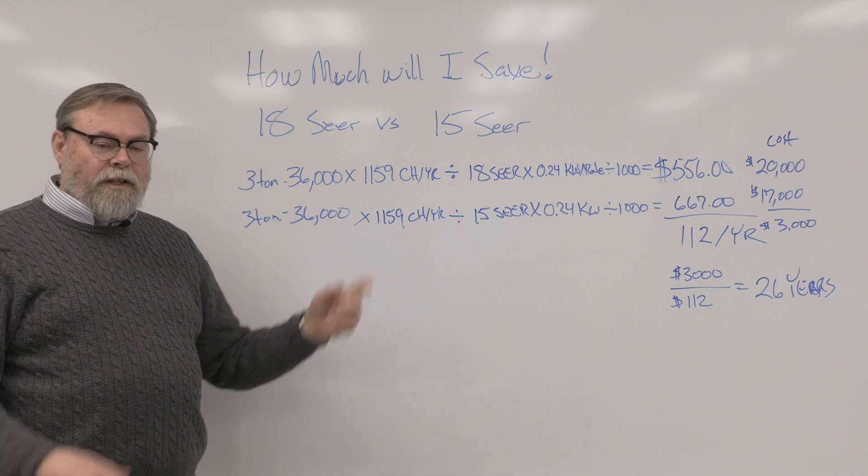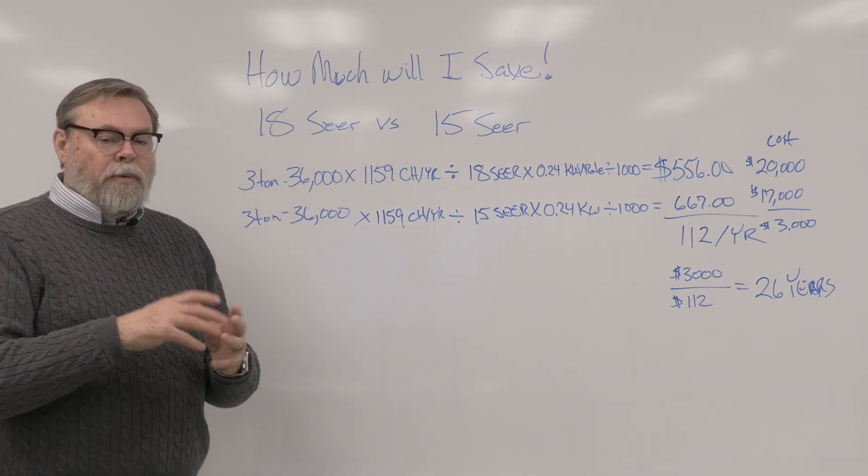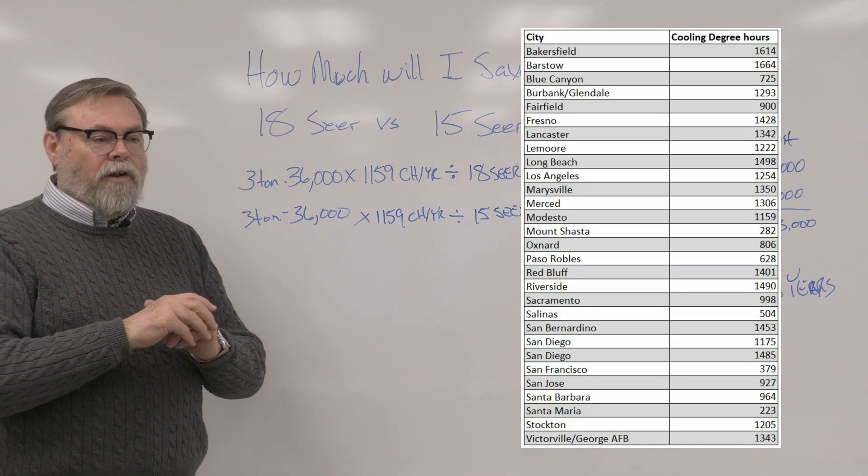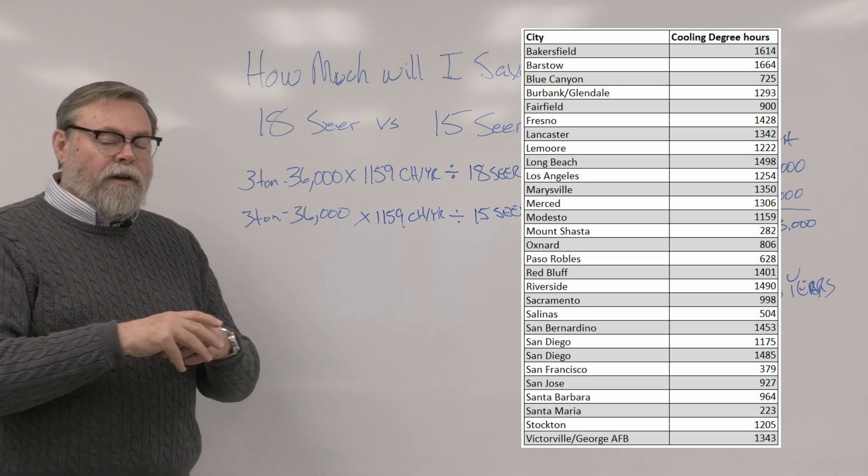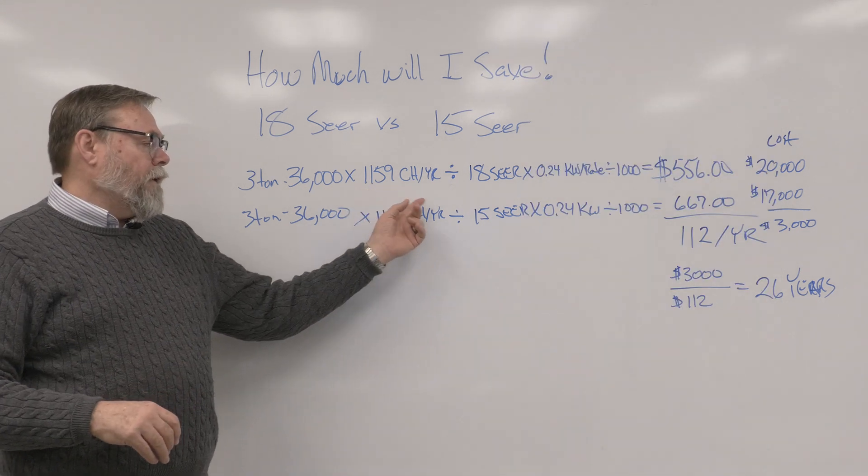But, 1,159 cooling hours. This is data provided by the Department of Energy. You can pull this data up for your area and it will tell you how many cooling hours you have in your area. You take that 1,159 per year,